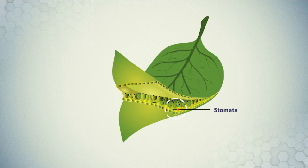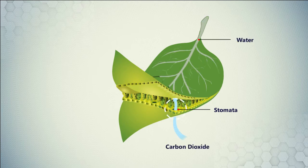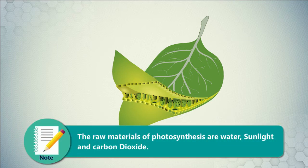Stomata are where oxygen exits and carbon dioxide enters. Carbon dioxide diffuses through small holes under the leaf called stomata. Water enters the root and is transported to the leaves through specialized plant cells known as xylem.